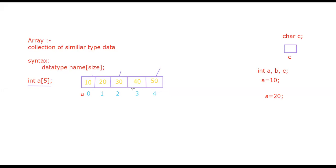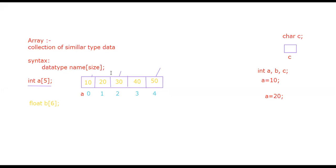If you are using float, another representation would be: float b[6]. So how many blocks are reserved? Six different blocks are reserved for the float data type.